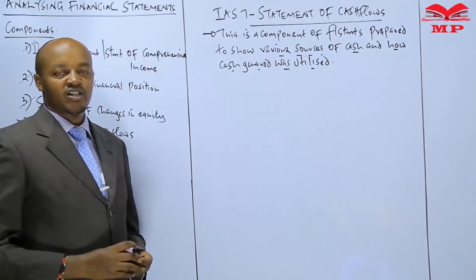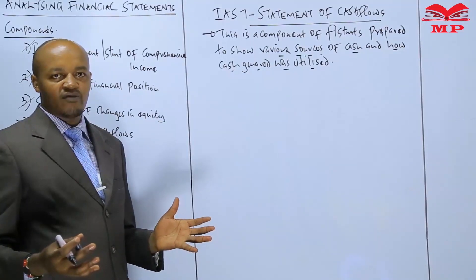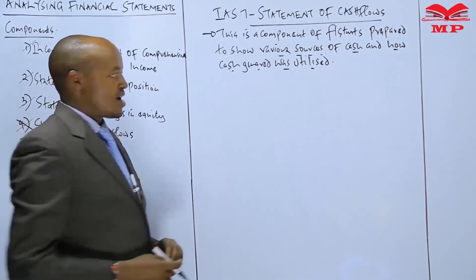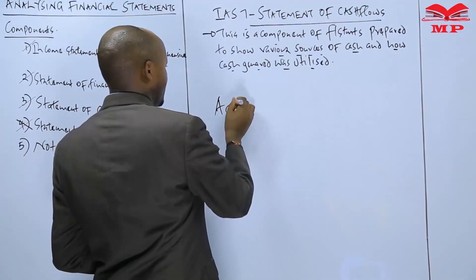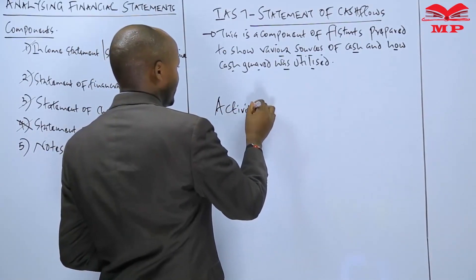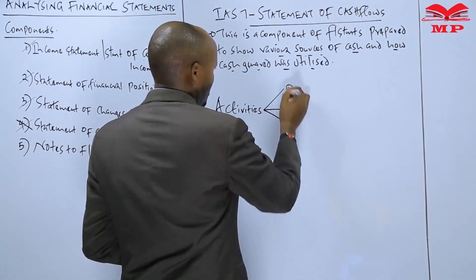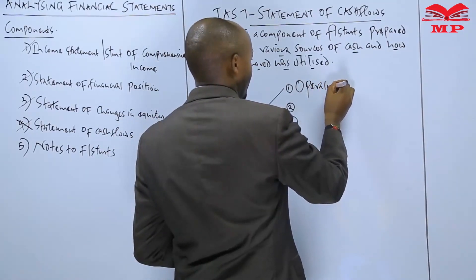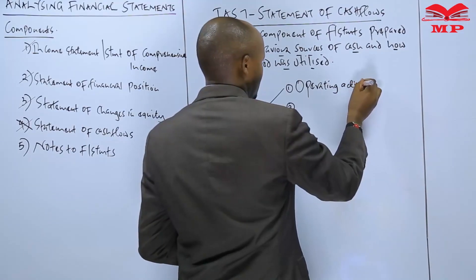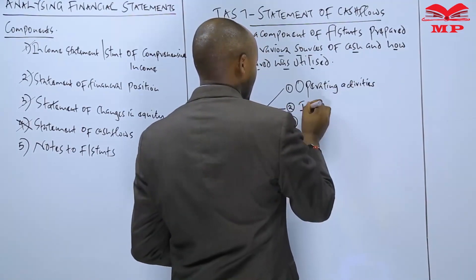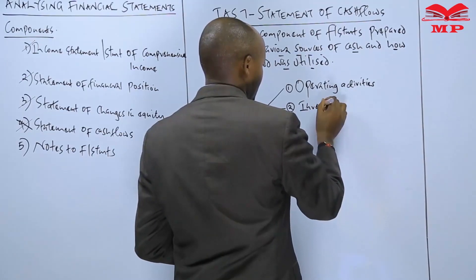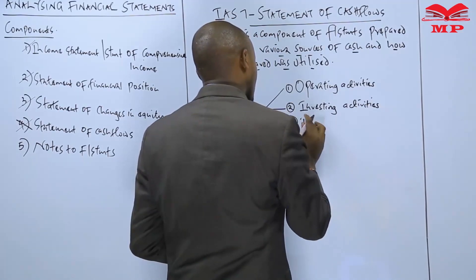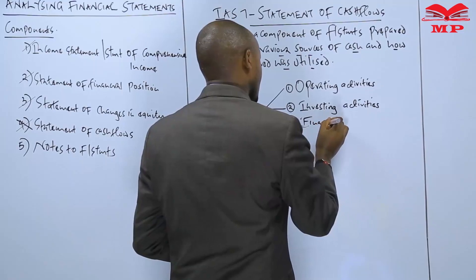When preparing the statement of cash flow, the activities of a business are classified into three main categories: number one, operating activities; number two, investing activities; and number three, financing activities.